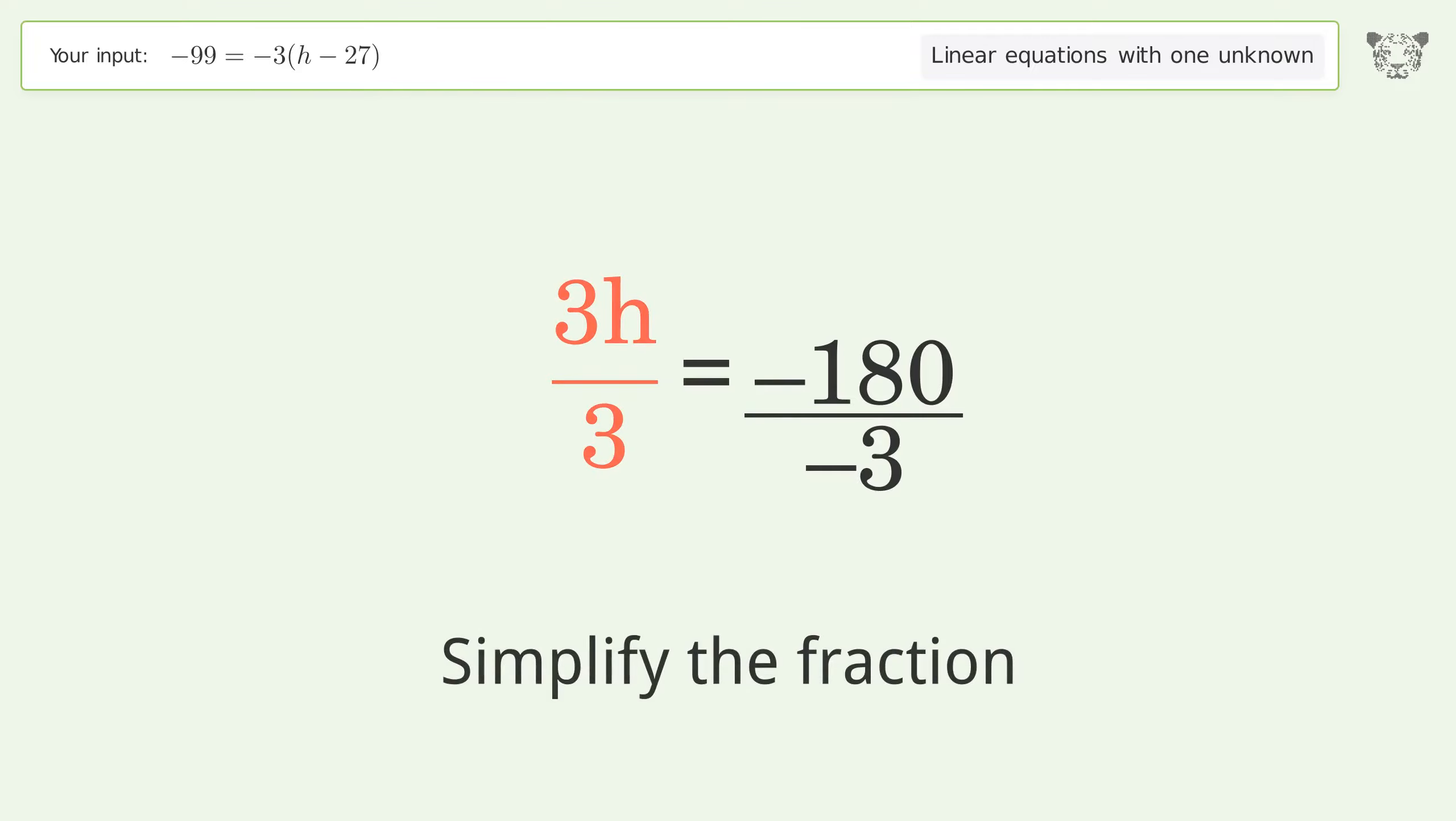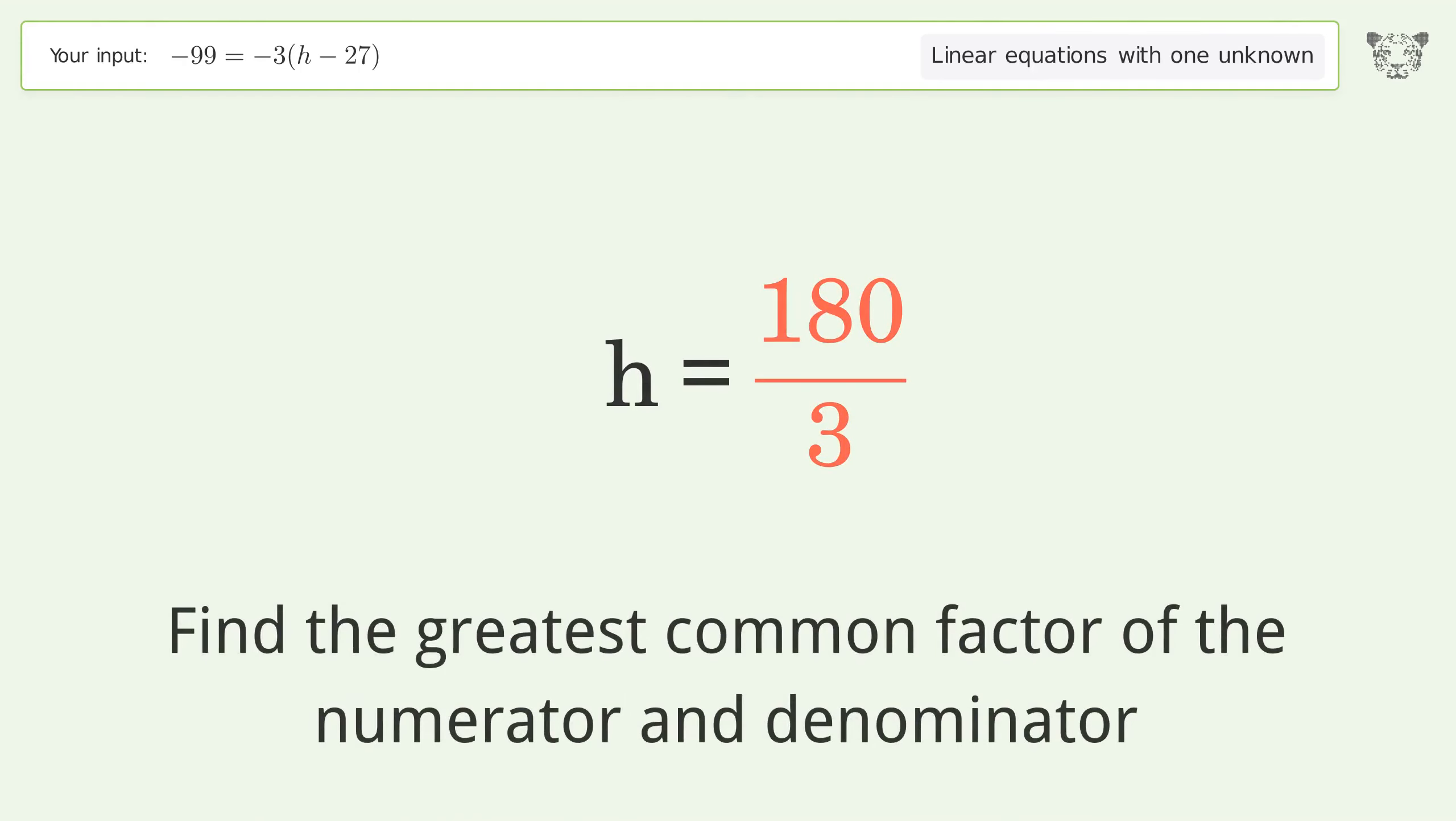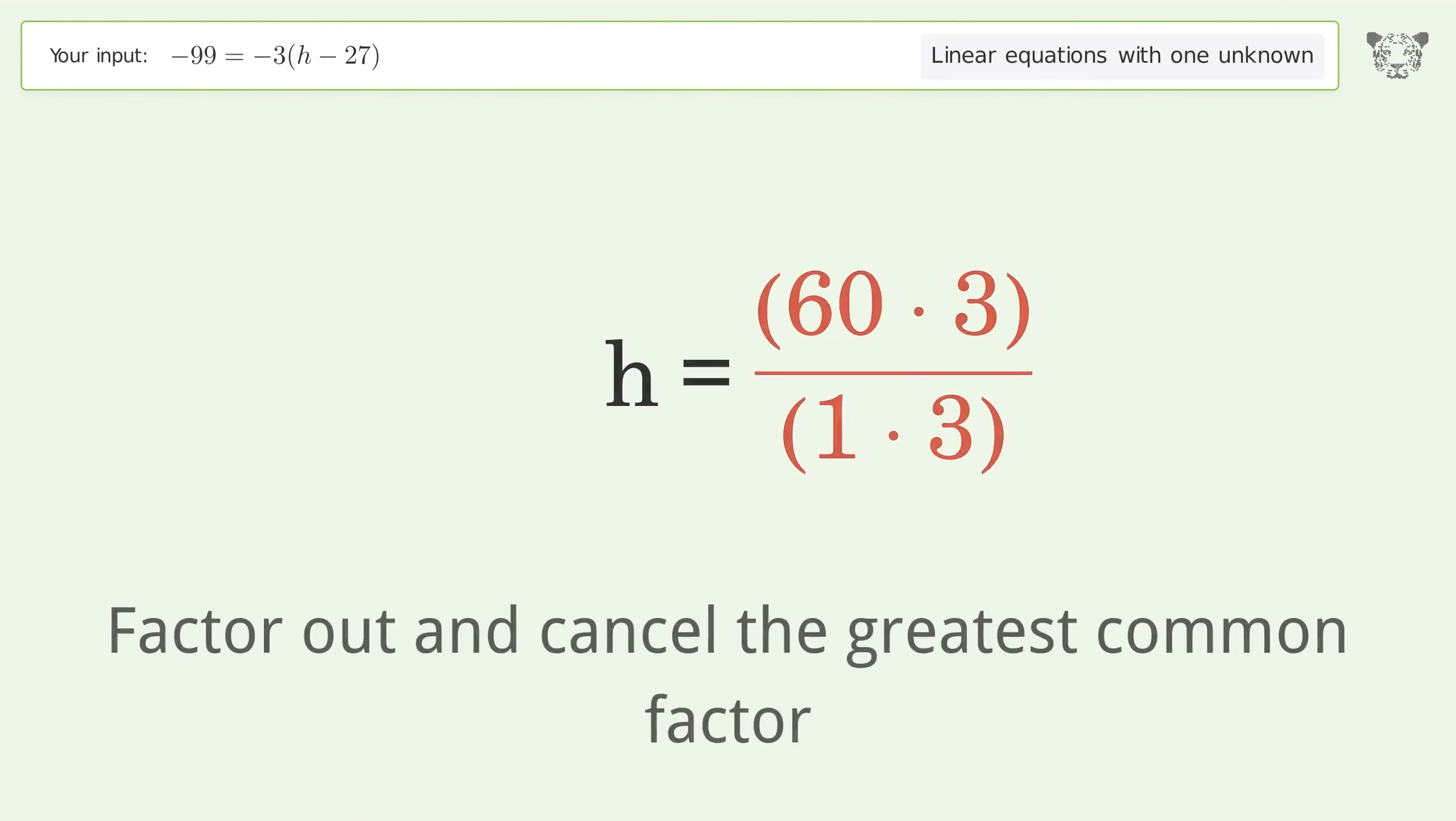Simplify the fraction. Cancel out the negatives. Find the greatest common factor of the numerator and denominator. Factor out and cancel the greatest common factor.